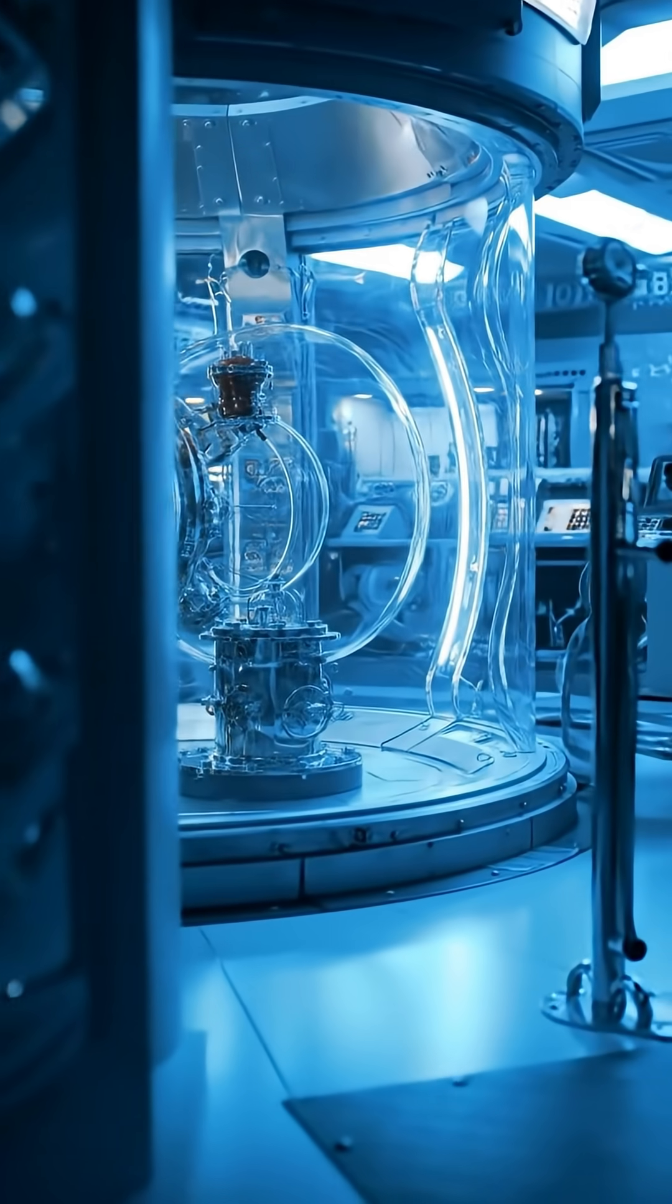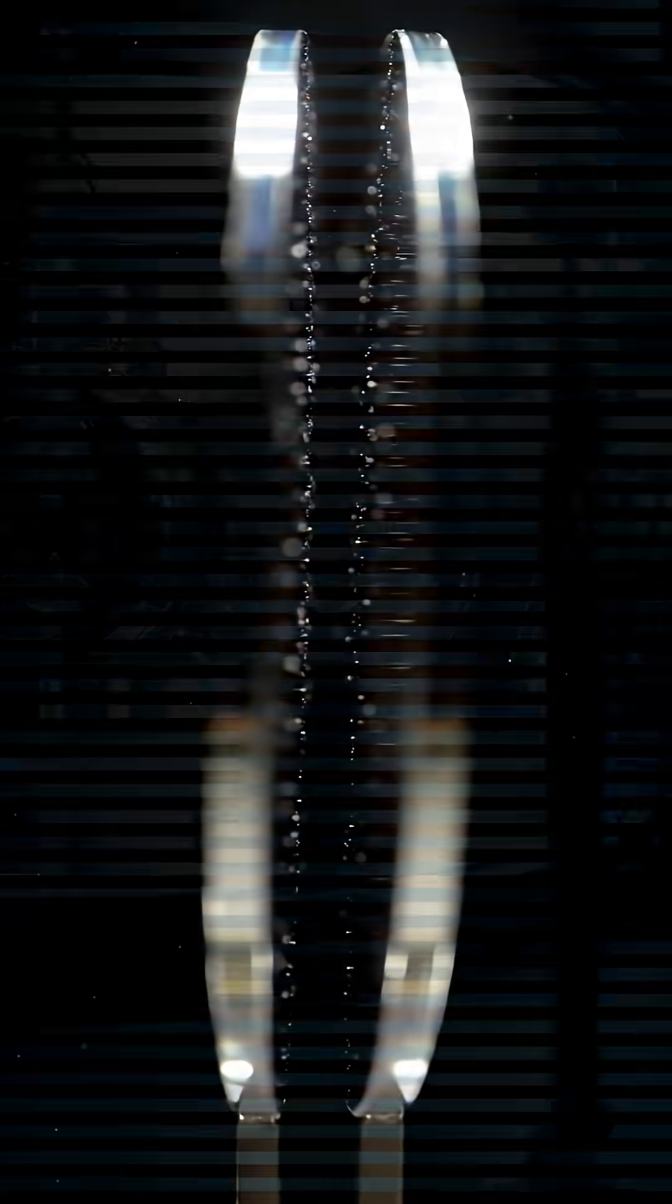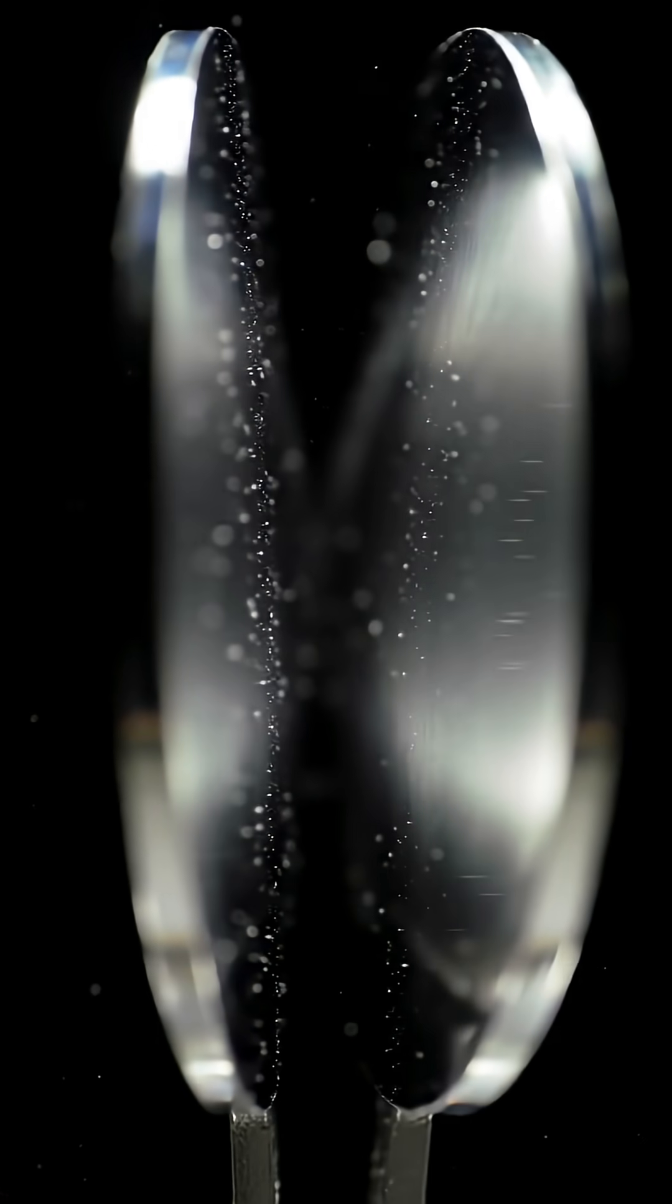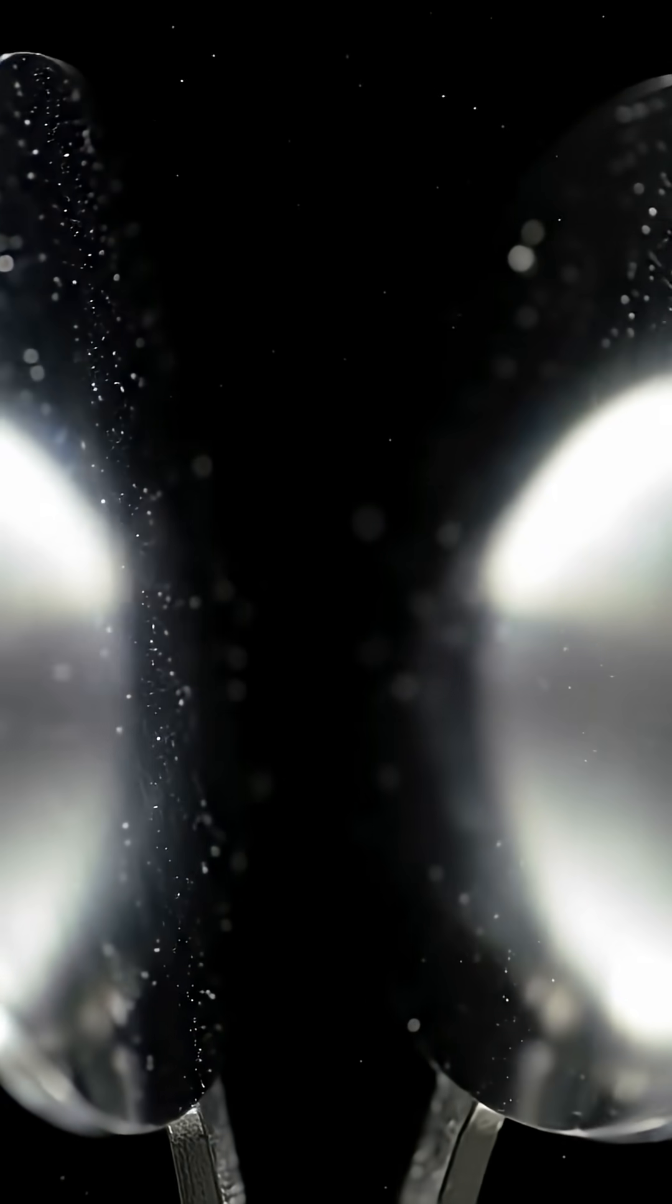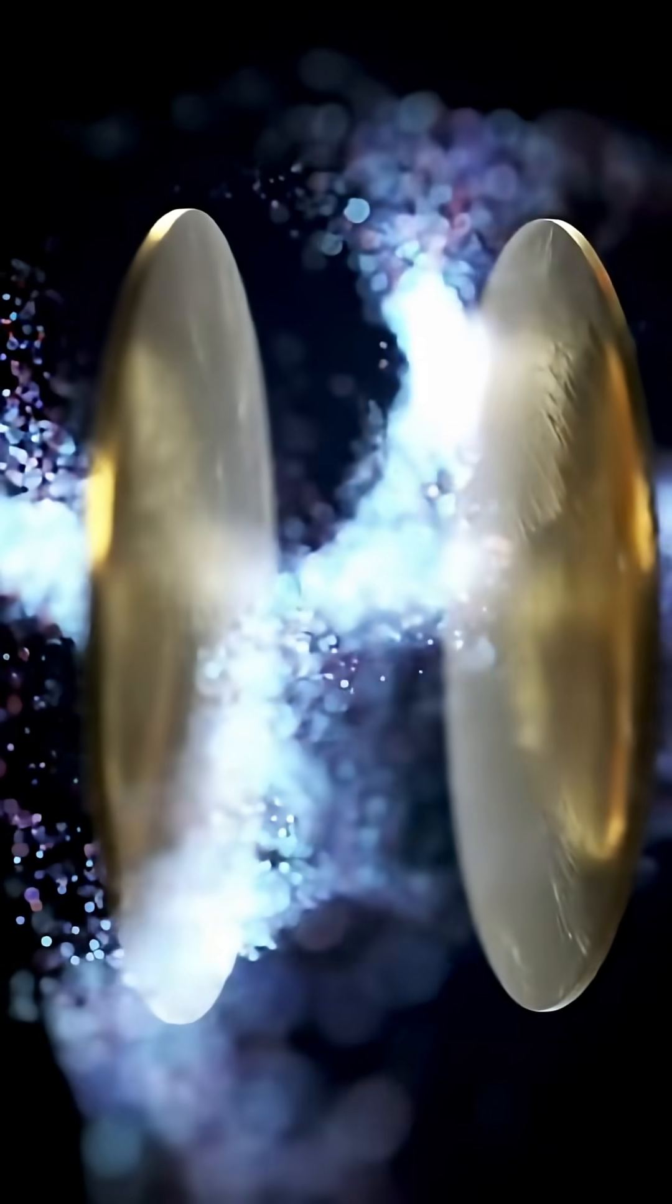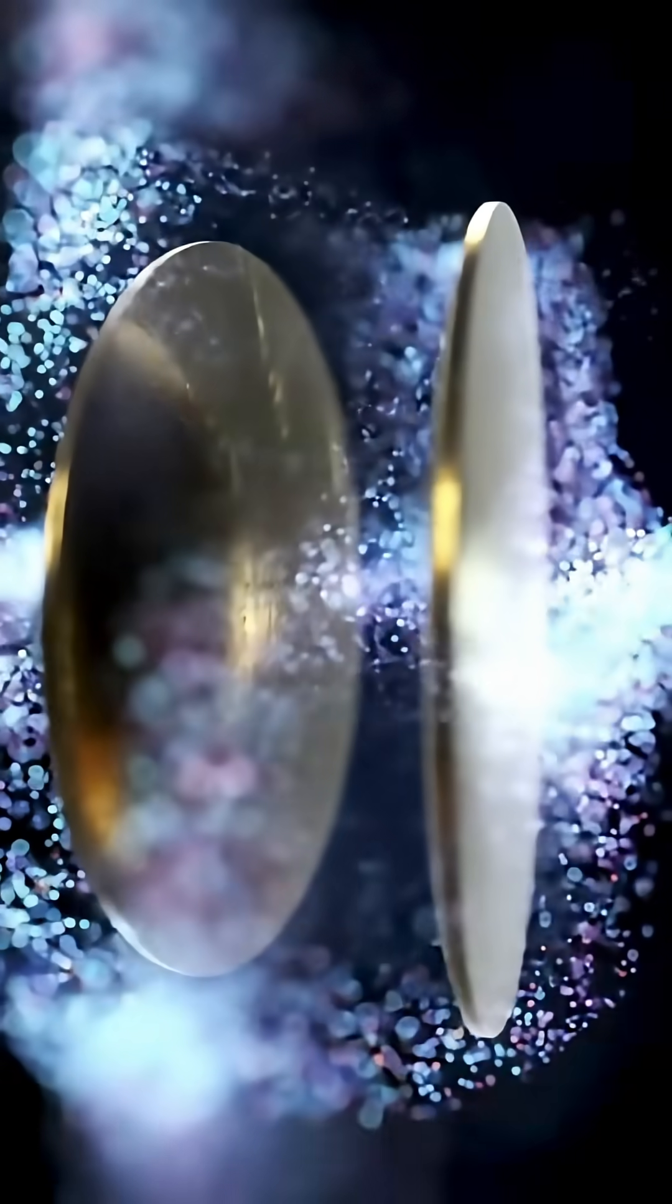Here's something wild. You can measure this invisible energy. Place two metal plates extremely close together in a vacuum, and they'll actually pull toward each other. With no forces, no magnets, no electricity. This is called the Casimir effect. Proof that empty space isn't empty at all.